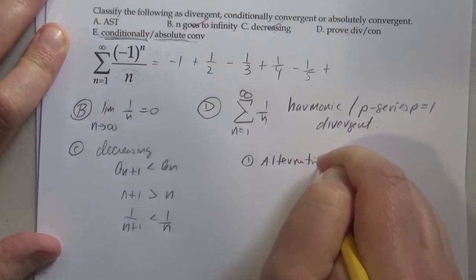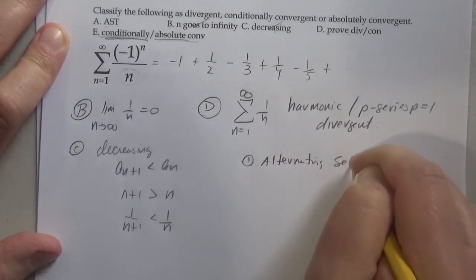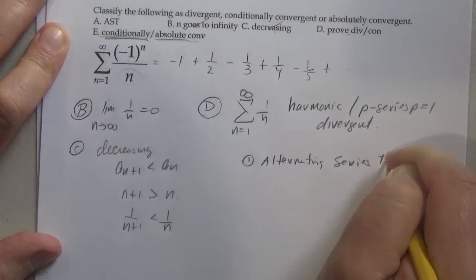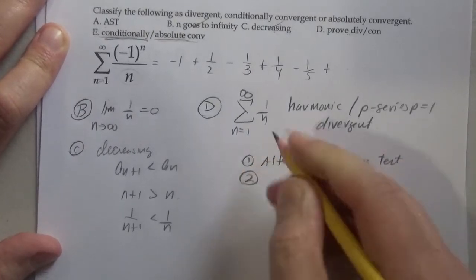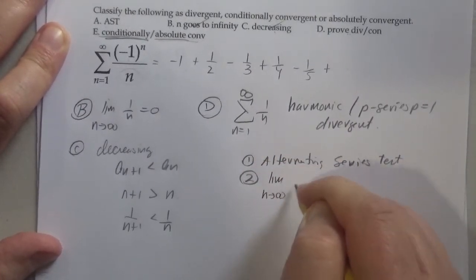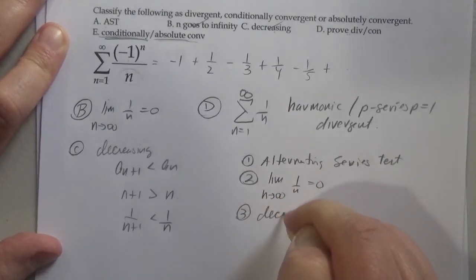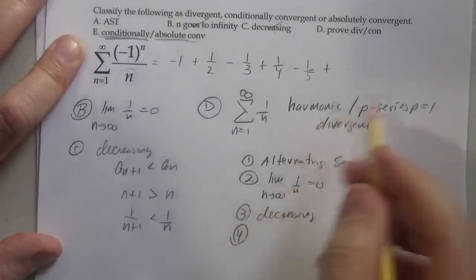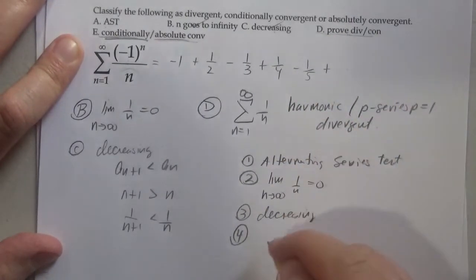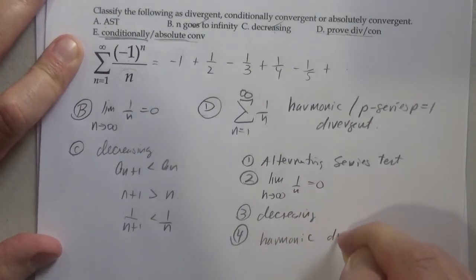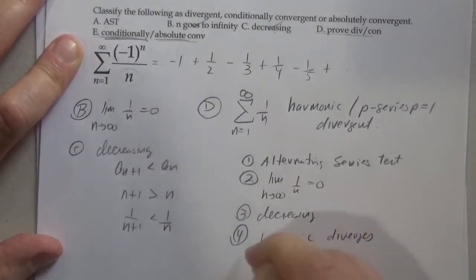We considered alternating series. Number two: we said the limit as n goes to infinity of 1 over n equals zero. Number three: we showed decreasing. Number four: we proved divergence convergence—harmonic diverges.